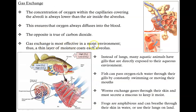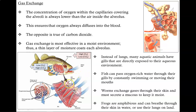Gas exchange is most effective in a moist environment. As such, a thin layer of moisture coats each of the alveoli. When it comes to aquatic animals like fish, instead of lungs, many of them have gills that are directly exposed to the aqueous environment. Fish pass oxygen-rich water through their gills by constantly swimming or opening and closing their mouths, and as that oxygen-rich water passes by their gills, they drop off oxygen into the bloodstream while removing carbon dioxide. With worms, they can exchange gases through their skin and must secrete a mucus in order to keep themselves moist. Meanwhile, frogs and other amphibious creatures can breathe through their skin in water, or they can use their lungs when they're on land.